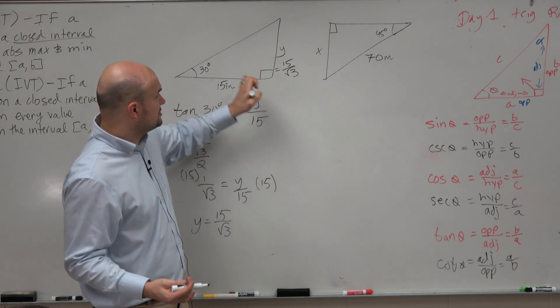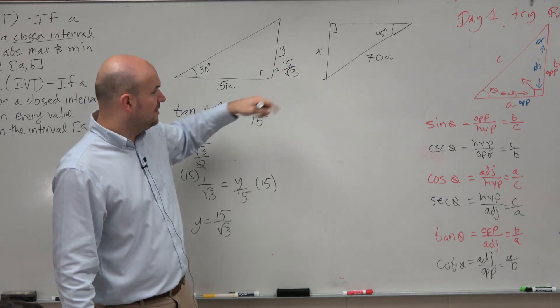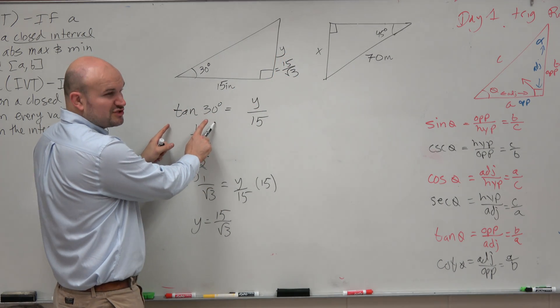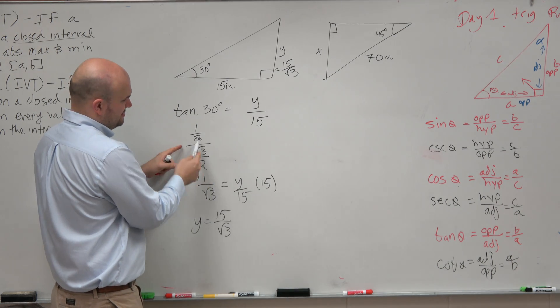So if you remember your special right triangles, you could easily go ahead and find y just by knowing that. That's fine. Or you could also use these triangles. And this one's not the greatest one because tangent, a lot of people don't remember.